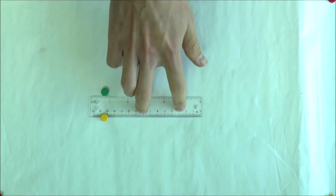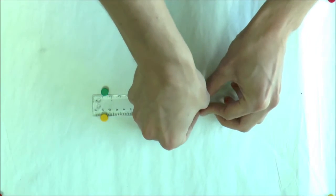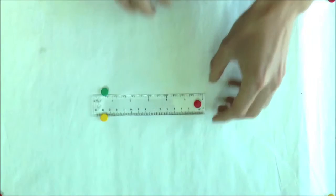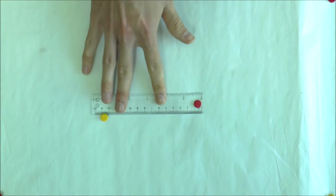This support allowing lateral motion is called a roller pin. The two supports together remove all three degrees of freedom from the ruler. Now it's no longer a mechanism.